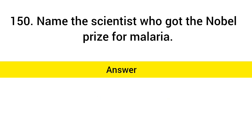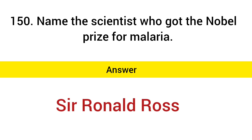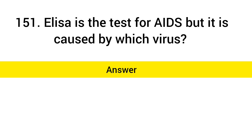Name the scientist who got the Nobel Prize for malaria. Answer: Sir Ronald Ross. ELISA is the test for AIDS, but it is caused by which virus? Answer: HIV.